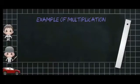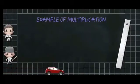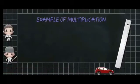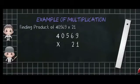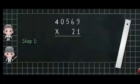Dear students, now we will learn multiplication of large numbers. Let's multiply 40,569 by 21. For this we need to arrange the multiplier and multiplicand in column and then multiply. We can divide the whole process into 3 steps.